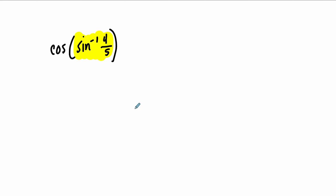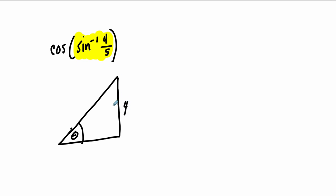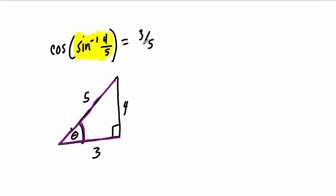You can always draw triangles to solve these kinds of problems. There's some angle theta where the sine of that angle gives you 4/5 — that's opposite over hypotenuse. Using the Pythagorean theorem, this is a 3-4-5 triangle. We can quickly assess that the cosine of this angle, which is adjacent over hypotenuse, is 3/5. And that's the answer. We can also find the tangent, which is opposite over adjacent, so 4/3; secant is 5/3; cosecant is 5/4; cotangent is 3/4.